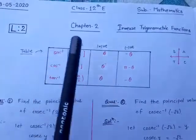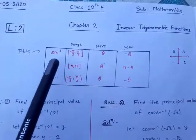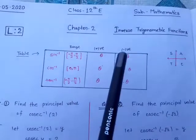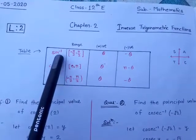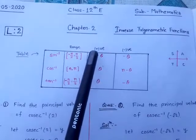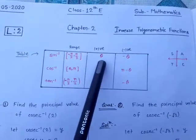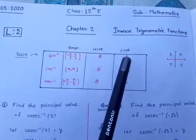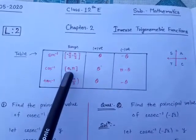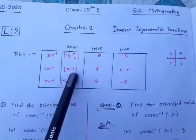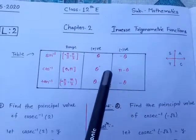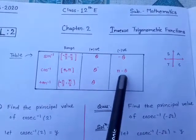In the previous lecture you also discussed this table. For sine inverse, the range is [−π/2, π/2] in closed interval. In the positive case there is no change. But in the negative case we change theta into minus theta. For cosine inverse the range is [0, π] in closed interval; in the positive case it is positive theta, and in the negative case theta changes to π minus theta.